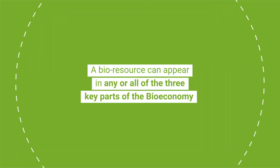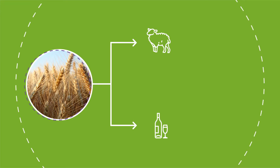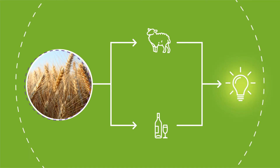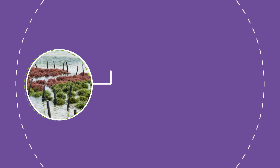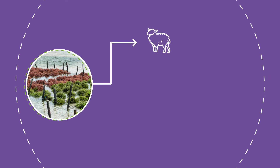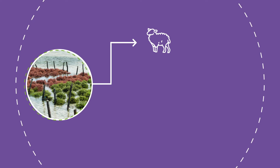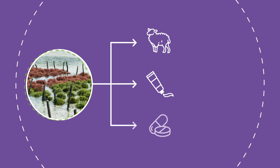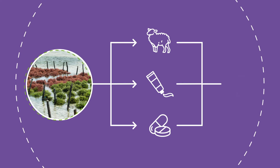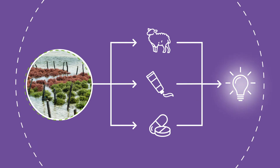A bio-resource can appear in any or all of the three key parts of the bioeconomy. For example, a cereal crop like barley can be used as animal feed or processed to make alcoholic drinks. The straw left behind after the barley harvest can be used to generate energy. Algae and seaweed can be used as animal feed in an untreated state. Once processed into extracts like agar, carrageenan and alginate, they become important ingredients in foods, cosmetics and medicines. The waste materials left behind after seaweed processing can be used in anaerobic digesters to create biomethane for energy.